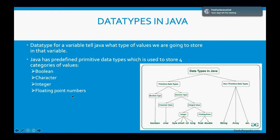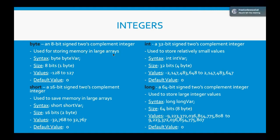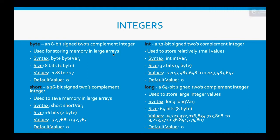Moving on to the next slide, for the integer, it's divided into four types: byte, short, int, and long. I'm going to try to explain what the differences are between these four types of integers and also where they can be used.